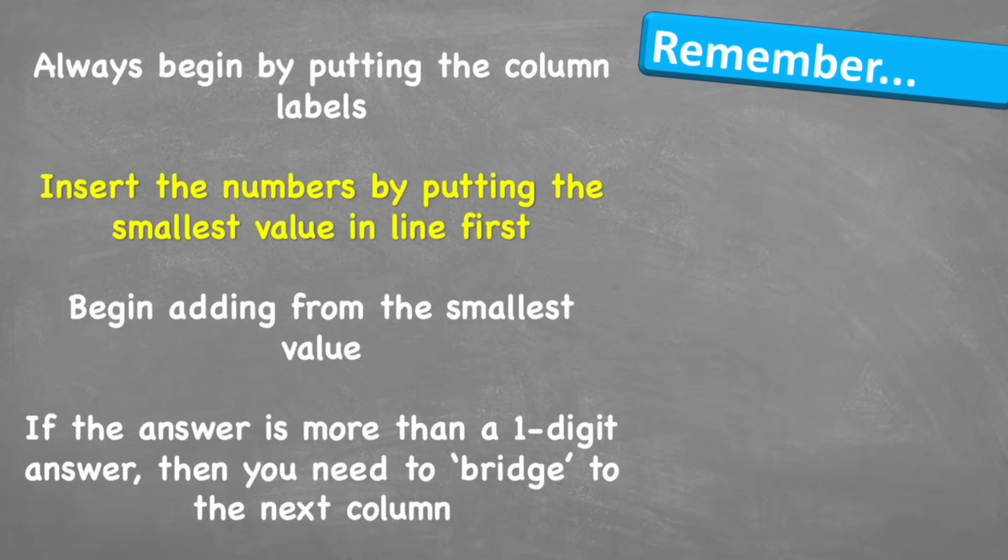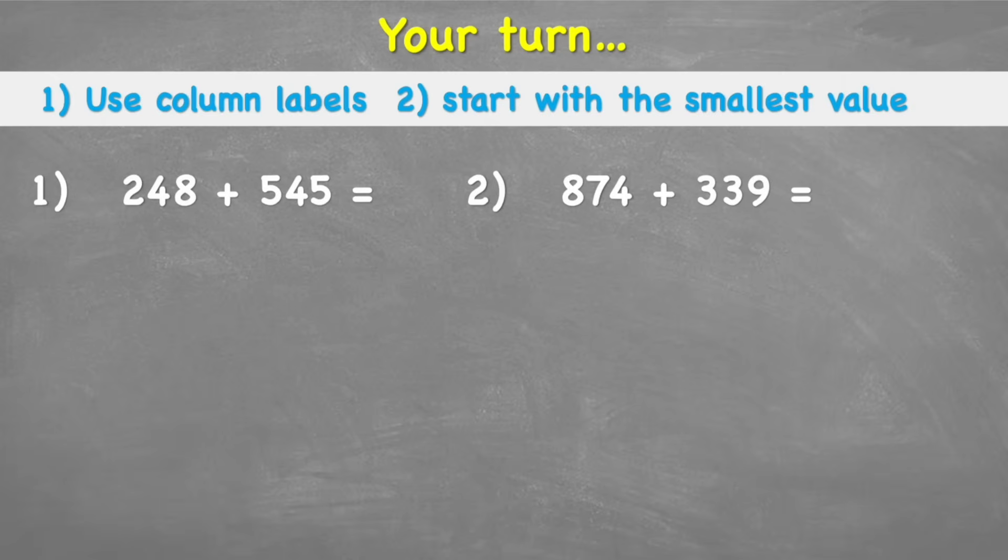Let's look at what to remember. Always begin by putting the column labels. This will help you avoid making any small mistakes. Always insert the numbers by putting the smallest value in first. Begin adding from the smallest value. This is really important. If the answer is more than a one digit answer, then we can bridge it into the next column.